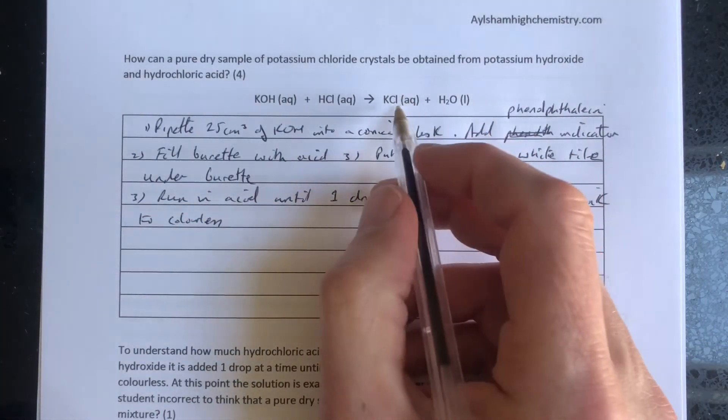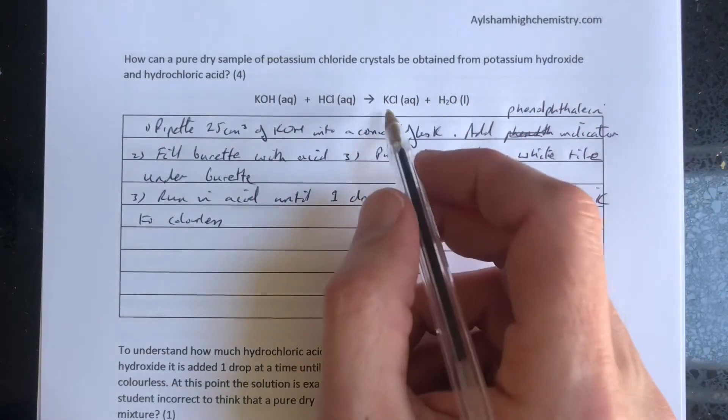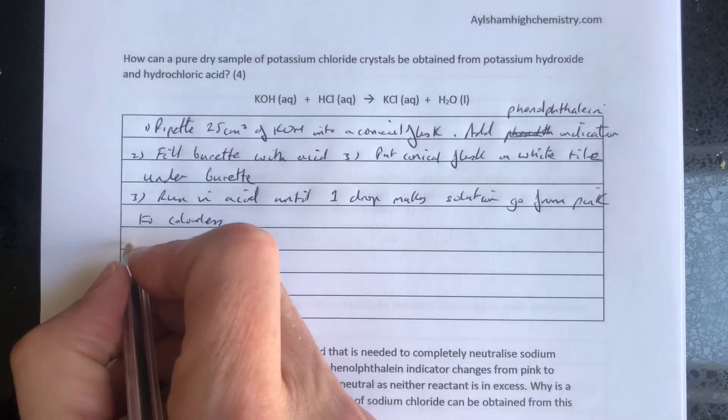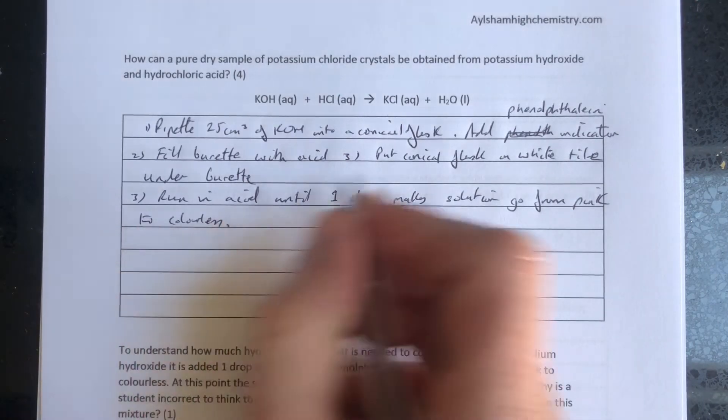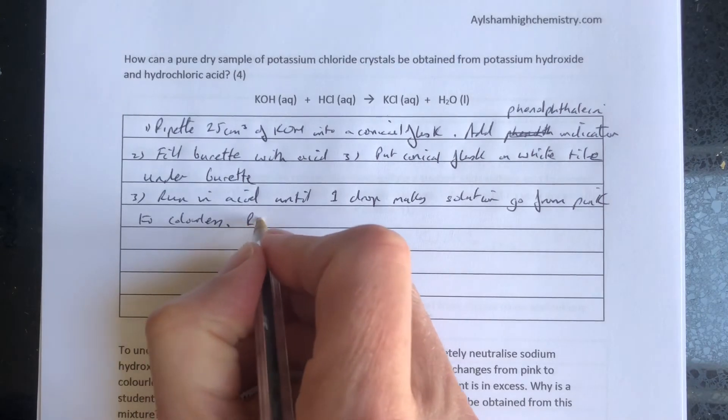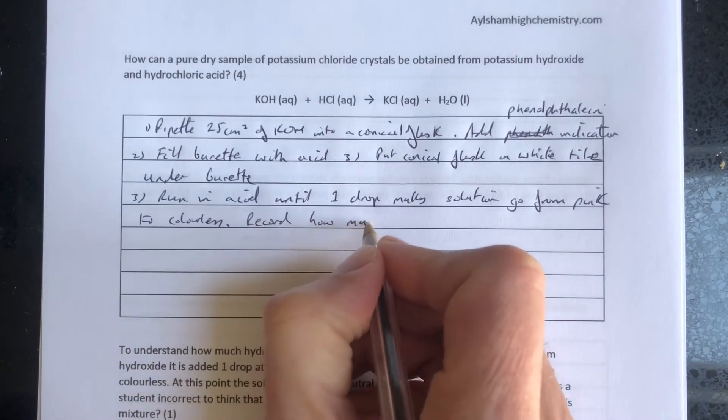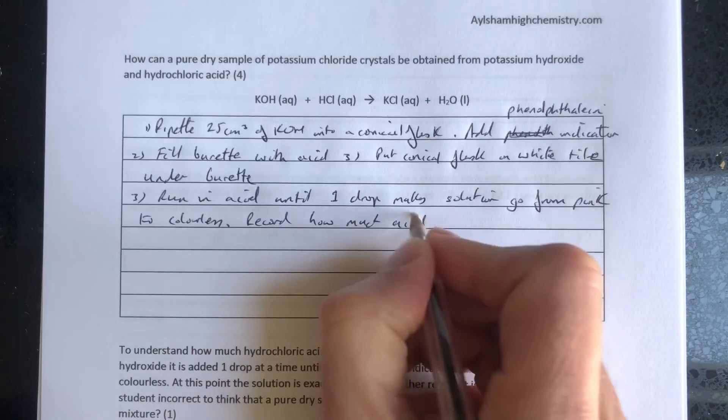You may think now that you have potassium chloride and water that's exactly neutral, you could just evaporate the water. But the indicator is still in there and will make it impure. So we need to record how much acid was added.